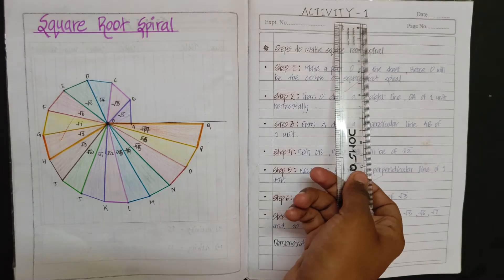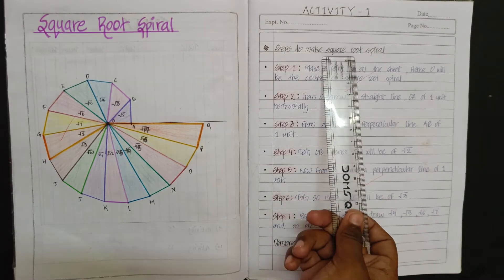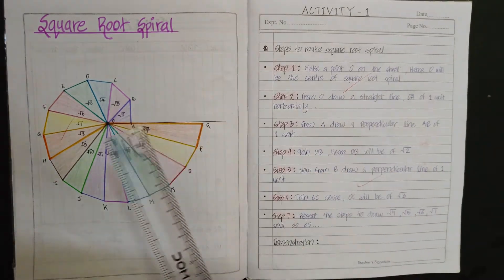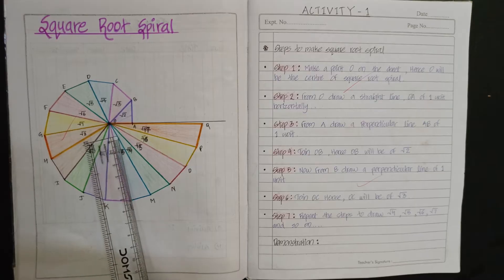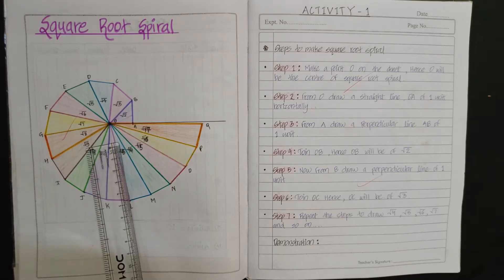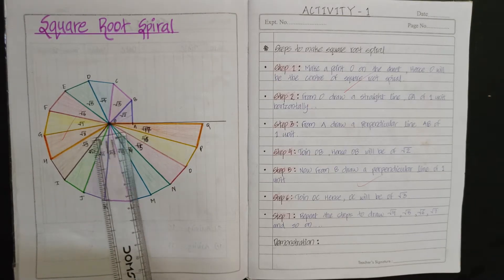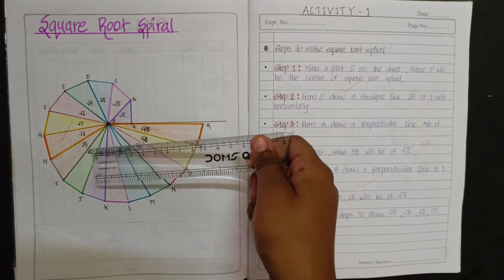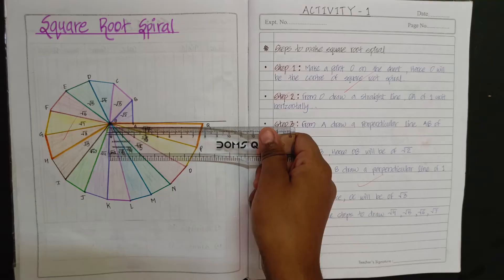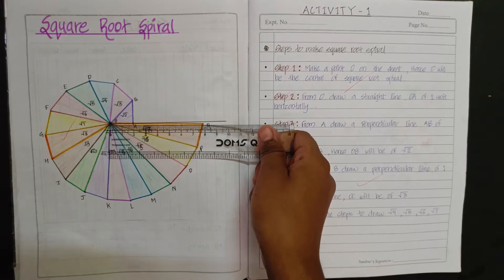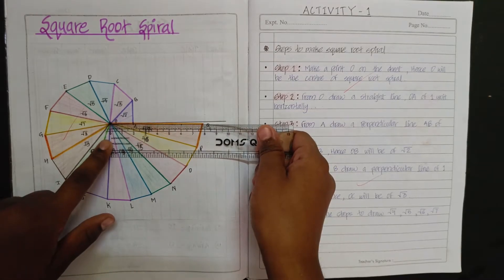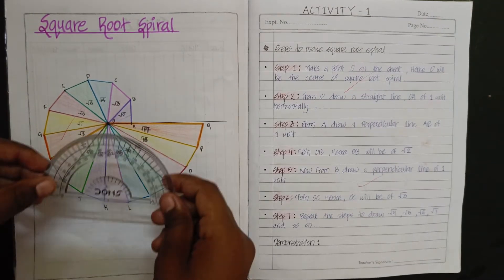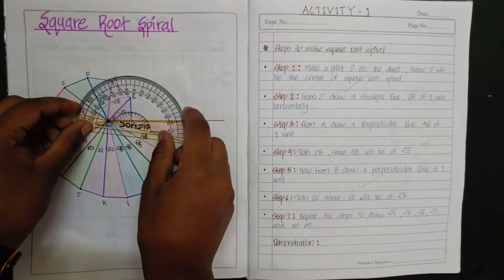This is Activity One: how to make a square root spiral. First, we will take a point O on a sheet, then we will make a horizontal line segment of one unit OA. Then we make an angle of 90 degrees at A.